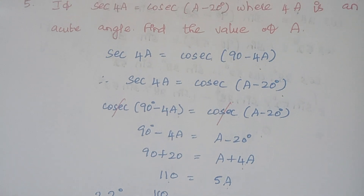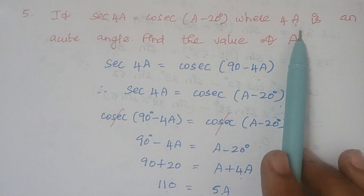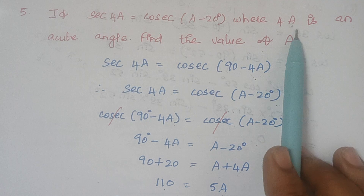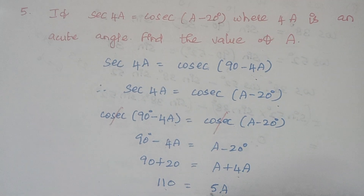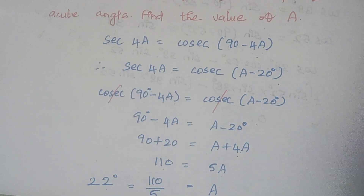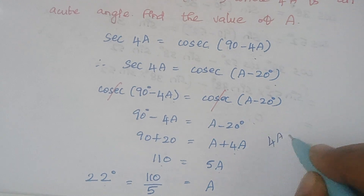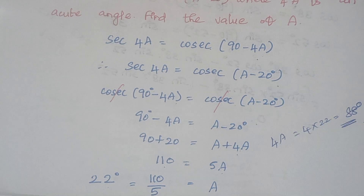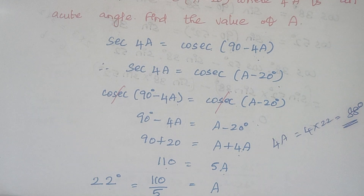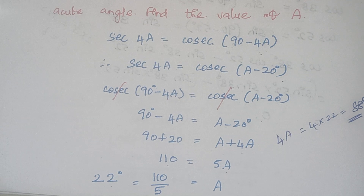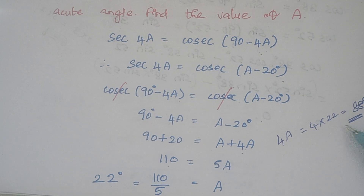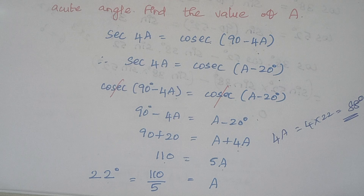To check: 4A is an acute angle, meaning it must be less than or equal to 90 degrees. The value of A is 22, so 4A equals 4 times 22 which is 88 degrees — this condition is satisfied. The value of A is 22 degrees. You don't have to do this check step; it's just there if you have any doubt.